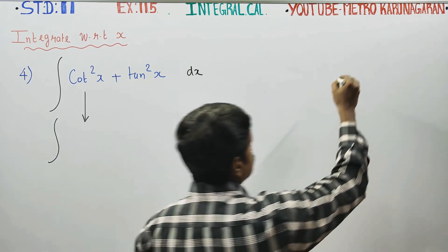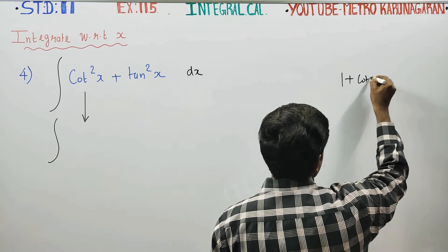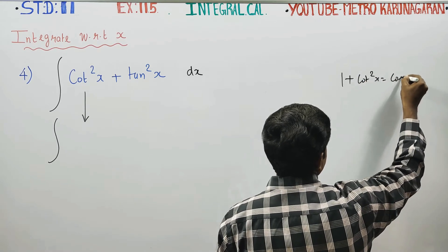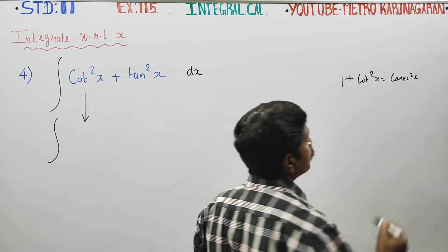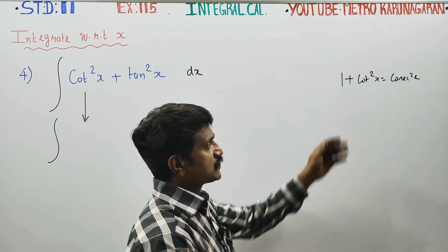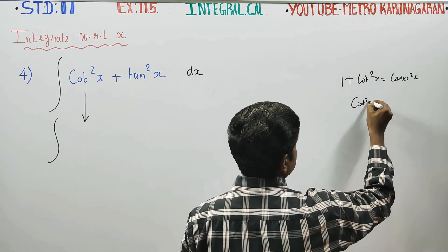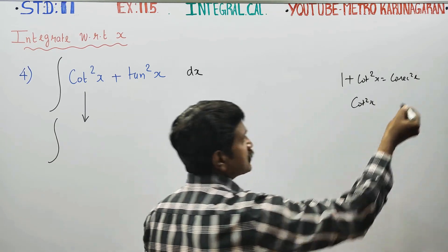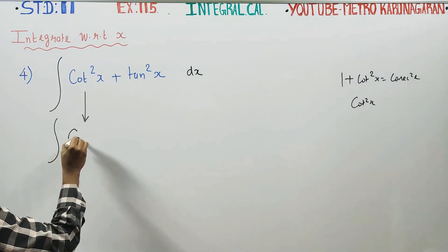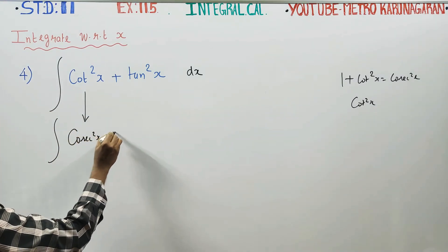1 plus cot square x is cosecant square x. So what is cot square x? cot square x is cosecant square x minus 1. So we write cosecant square x minus 1.